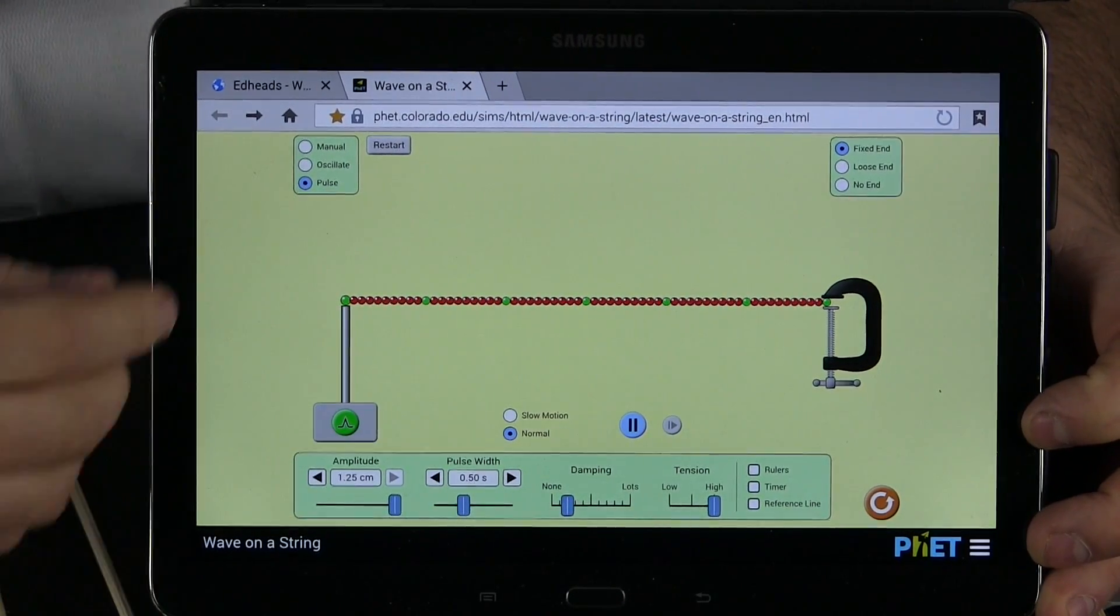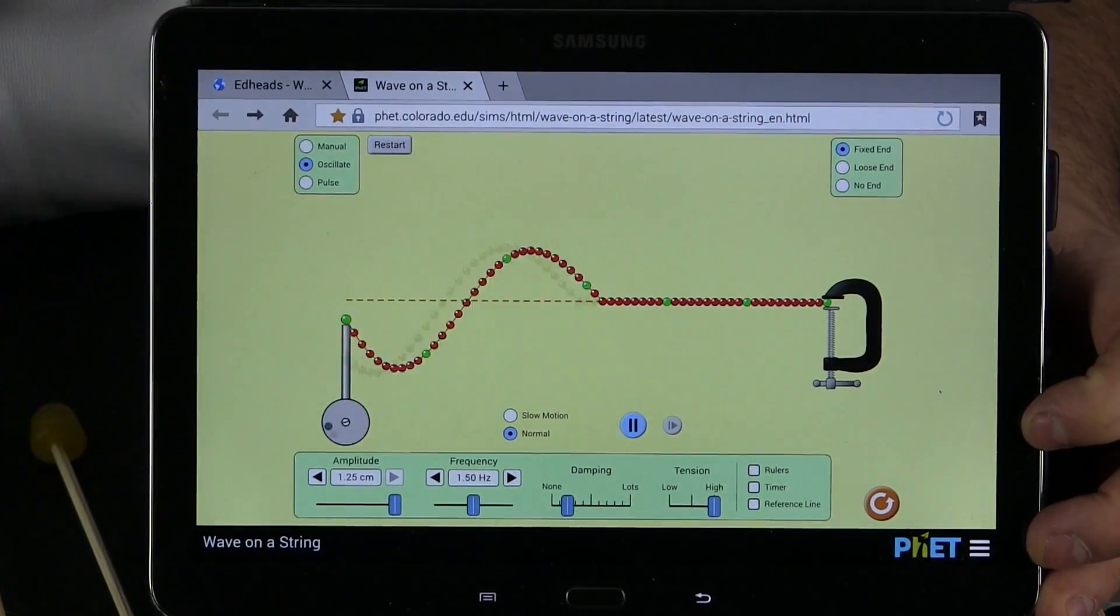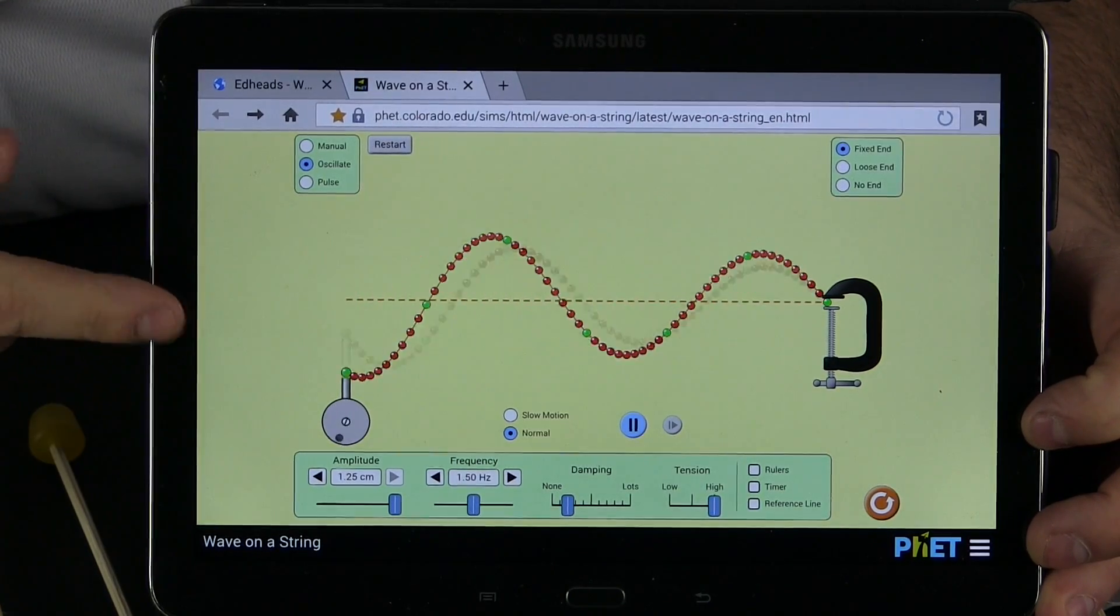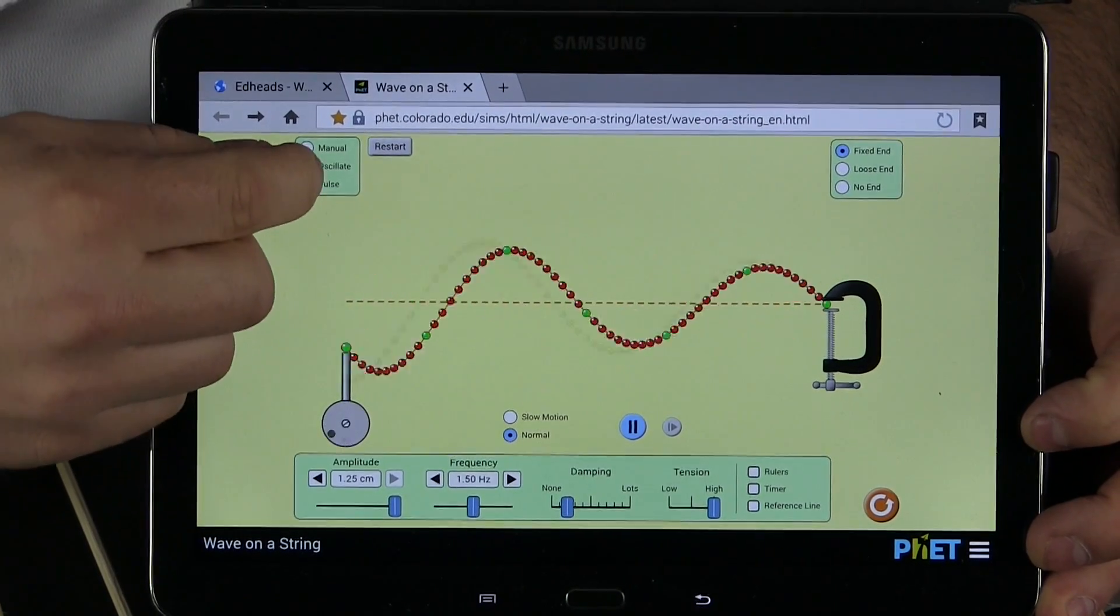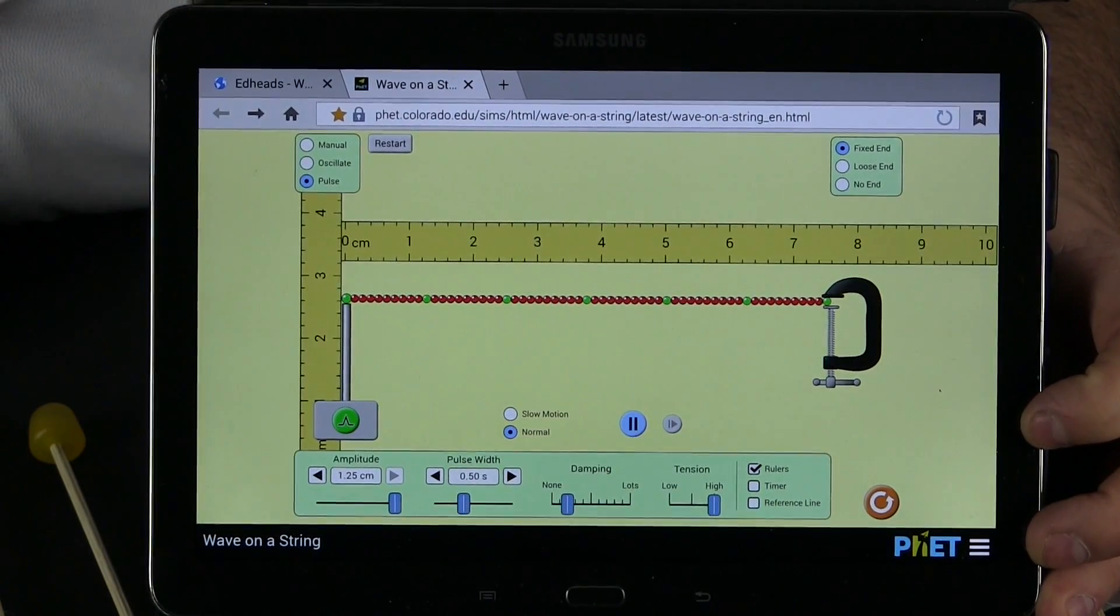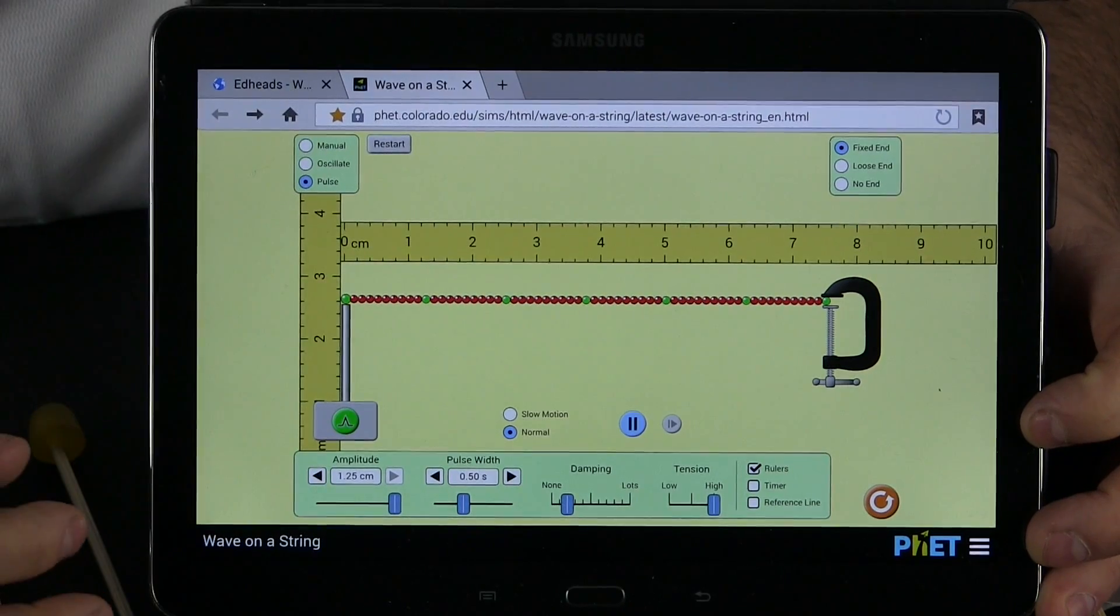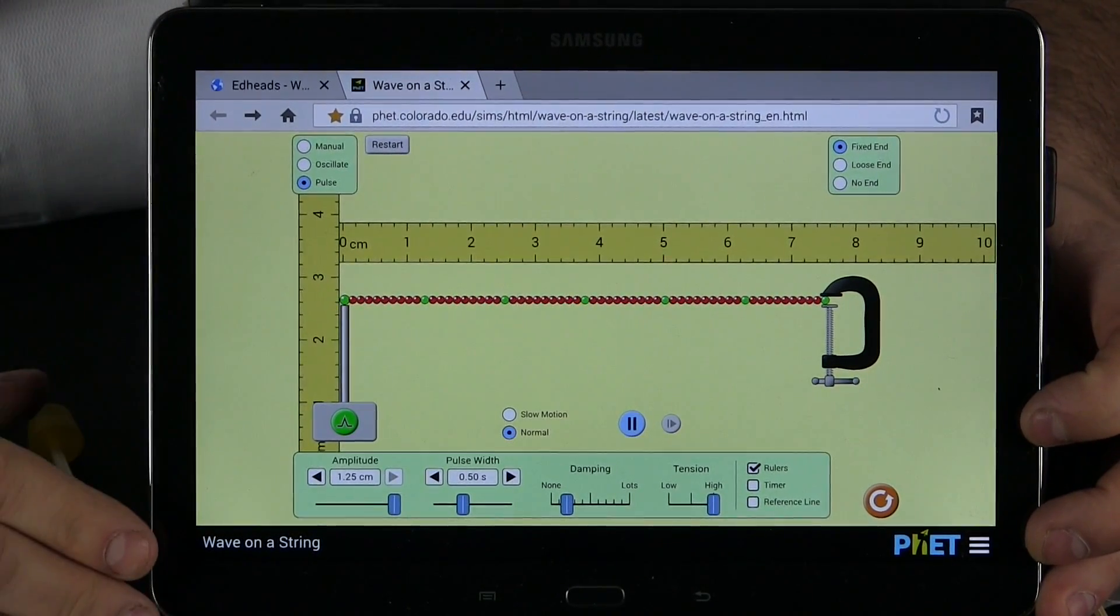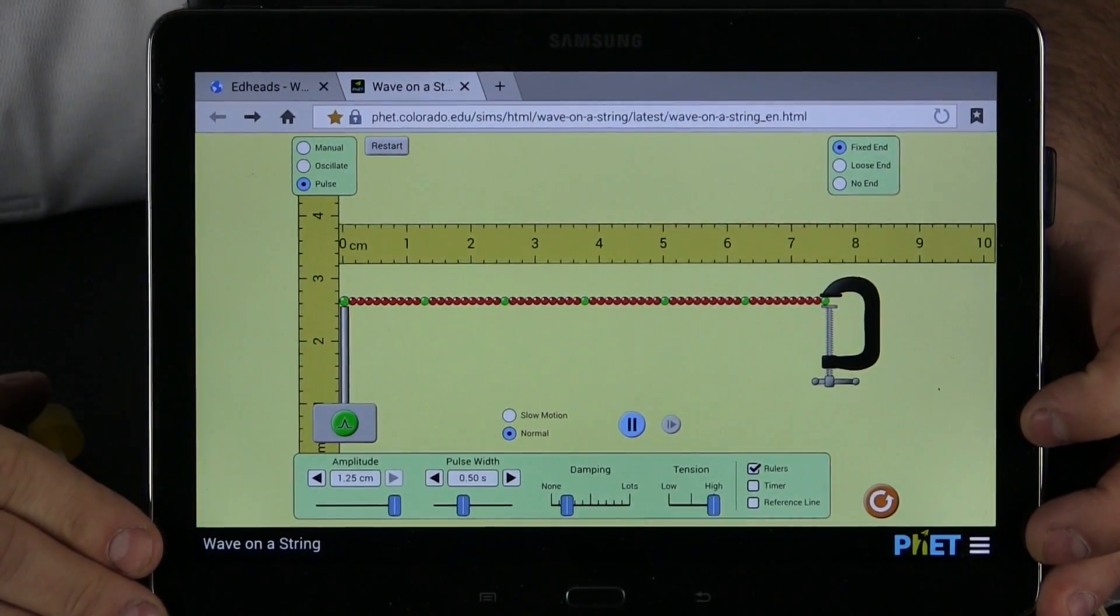The other thing we can do, if we wanted these waves to come automatically, is we can hit this button up here and the machine makes the waves come automatically. We can also hit this button up here if we wanted to collect some data and really measure things. Rulers come onto the screen. There is so much that this simulation can do. You can explore it on your own.